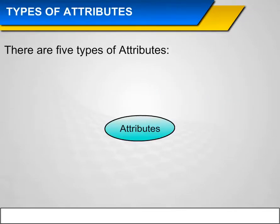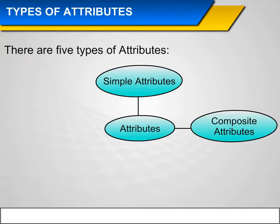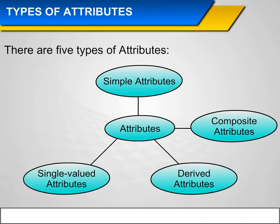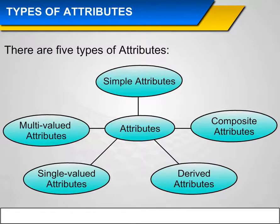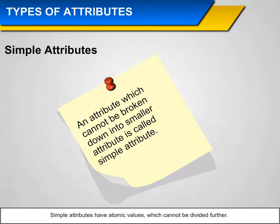Types of attributes: There are five types of attributes — Simple Attributes, Composite Attributes, Derived Attributes, Single-valued Attributes, and Multi-valued Attributes. Simple Attributes: An attribute which cannot be broken down into a smaller attribute is called a simple attribute. Simple attributes have atomic values which cannot be divided further.